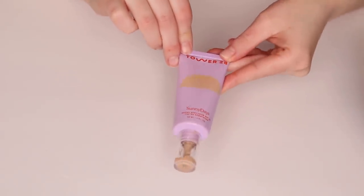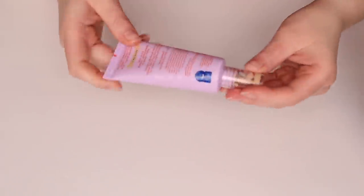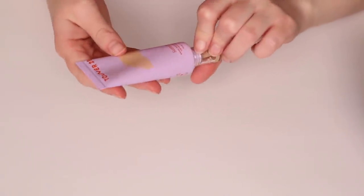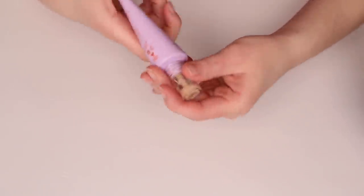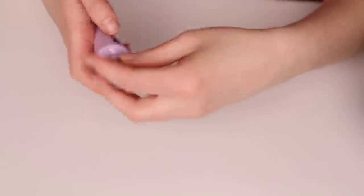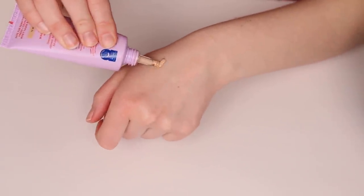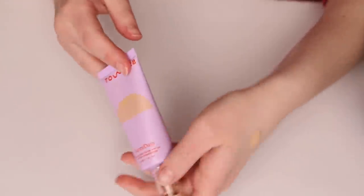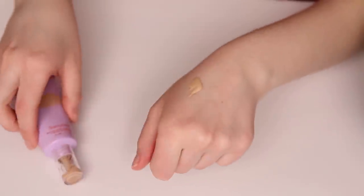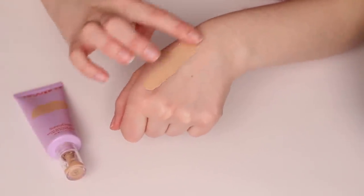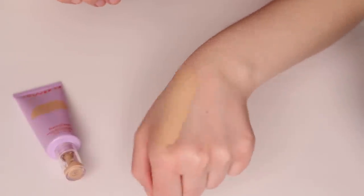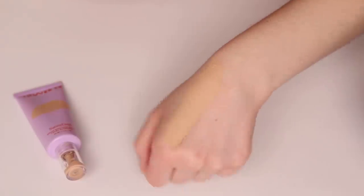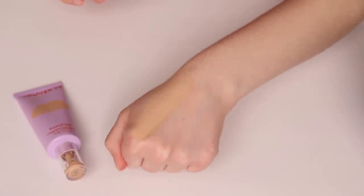I have my Tower 28 Sunny Days Tinted Moisturizer. So this is SPF 30, and this is the shade Melrose. This shade is typically too dark for me. Again, like I said, I am going to be doing a little bit of self-tan before I go, so I thought that this would be a good time to incorporate this into my routine. You can see it's a little bit too dark for me, not by much, but I would say about a shade.